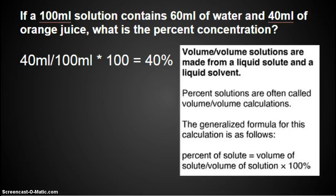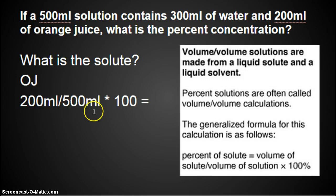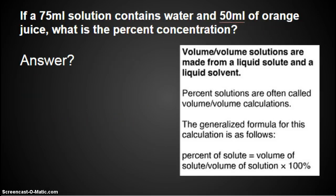So it's a 40% concentration of orange juice. If a 500 milliliter solution contains 300 milliliters of water and 200 milliliters of orange juice, what is the percent concentration? Here's your formula. Hit pause and figure it out. What's the solute? The OJ. So we have our orange juice divided by our total solution amount times 100 equals a 40% concentration.